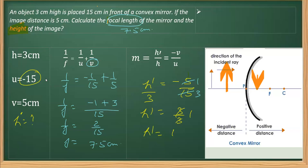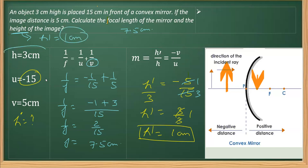The size of the image is 1 centimeter. As expected, the image is diminished in the case of a convex mirror — 1 centimeter is smaller than the object size of 3 centimeter. This is how this question is solved.